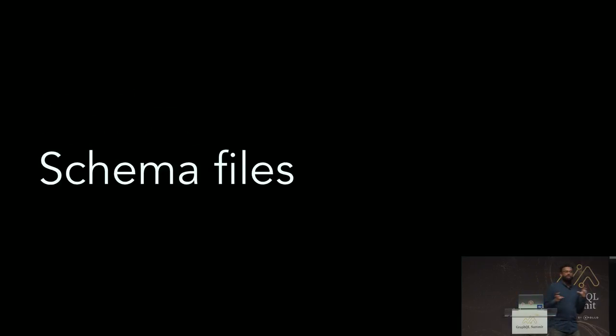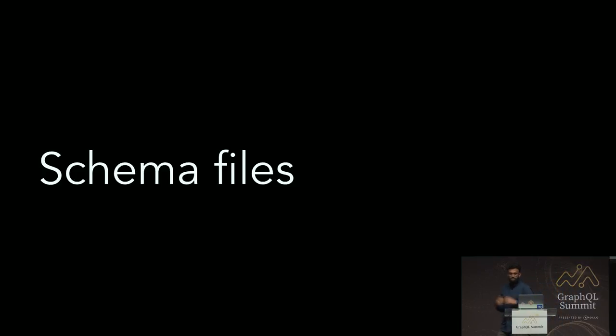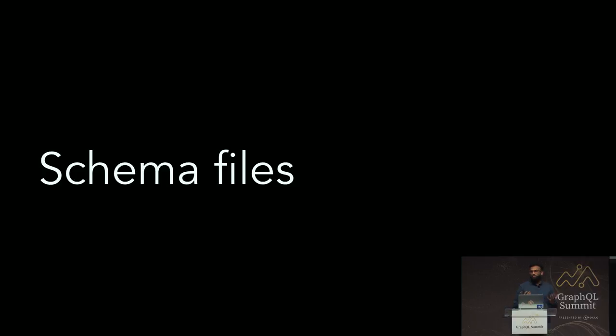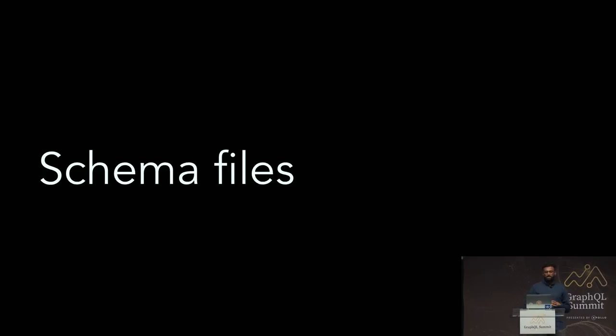One of the first decisions we had to make was, as we were onboarding more and more teams to our API, we realized we were representing our schema in an IDL file — an interface description language file. That file was growing really fast. You can imagine that being in the payments industry, we expose a lot of capabilities to our merchants, which are developed by a large number of teams. So our schema file was growing fast, and we had to decide how to organize our schema.